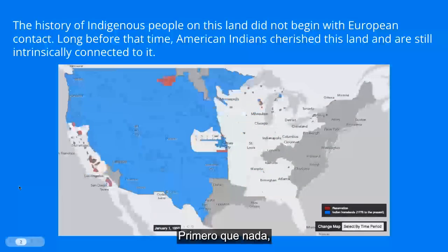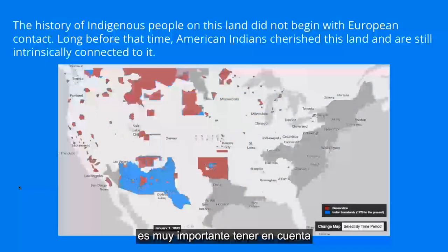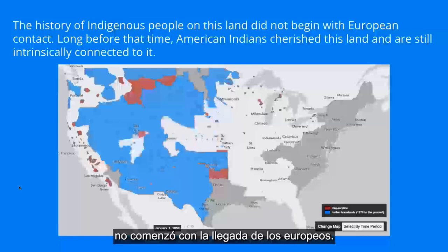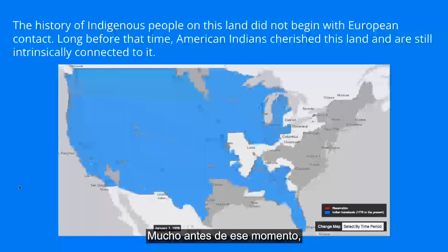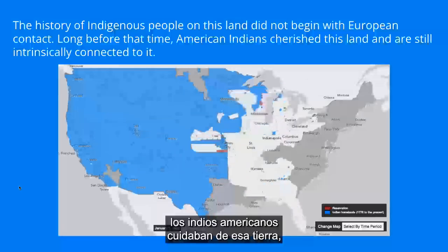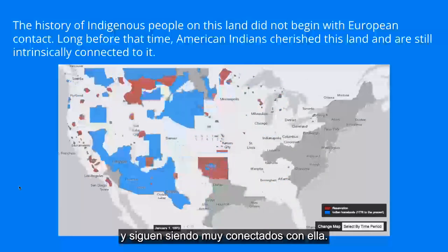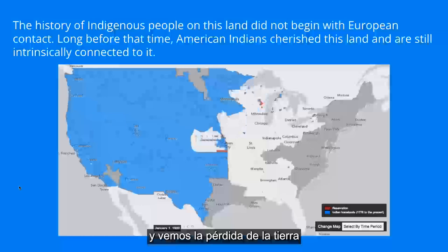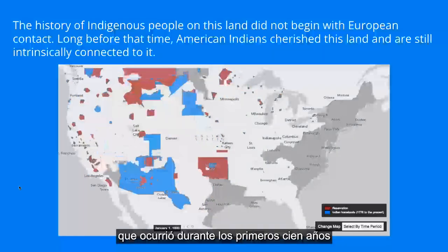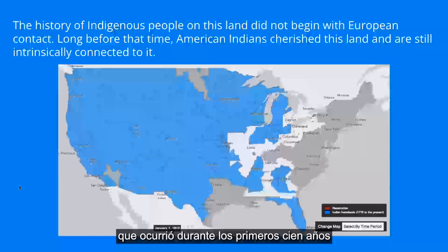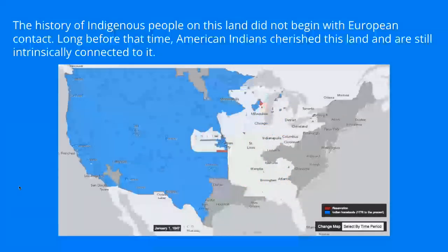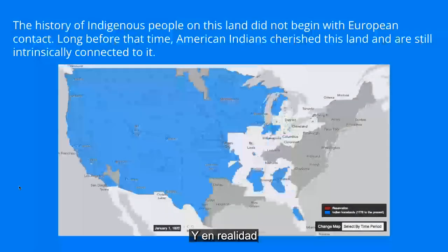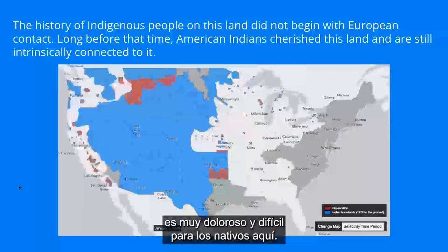It's important to keep in mind that the history of Indigenous people on this land did not begin with European contact. Long before that time, American Indians cherished this land and are still intrinsically connected to it. When you look at this map and you see the loss of land that occurred over the course of the first hundred years of the forming of the nation, you can see that it's a very dramatic loss and was really painful and difficult for the Indigenous people here.